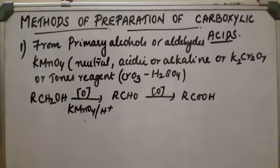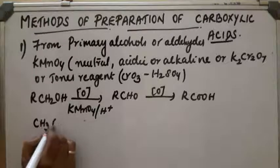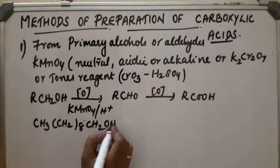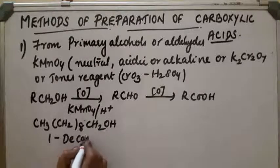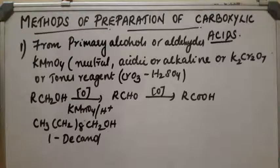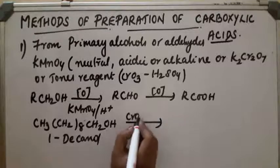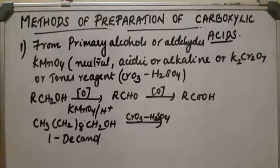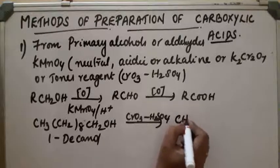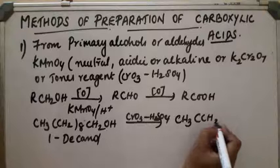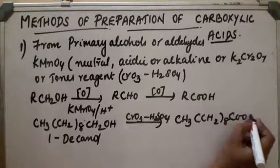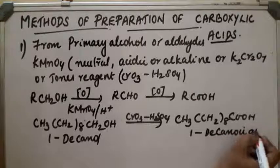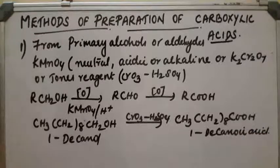Let us take one example: 1-decanol (CH3(CH2)8CH2OH). 1-decanol in presence of Jones' reagent — chromium trioxide in dilute H2SO4 — the reaction takes place and it gets converted into decanoic acid. This is the first method.